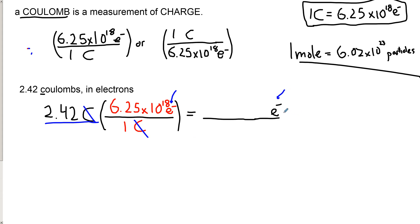So all I need to do, and I'm going to grab my calculator over here on my desk, and do the math. So I'm going to go 2.42 multiplied by 6.25 times 10 to the 18. And we are going to get 1.51 times 10 to the 19 electrons.